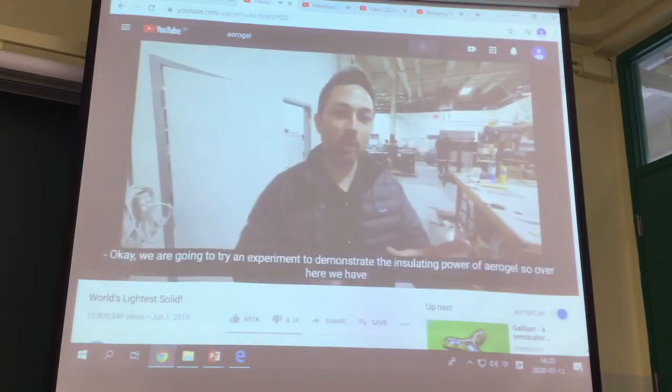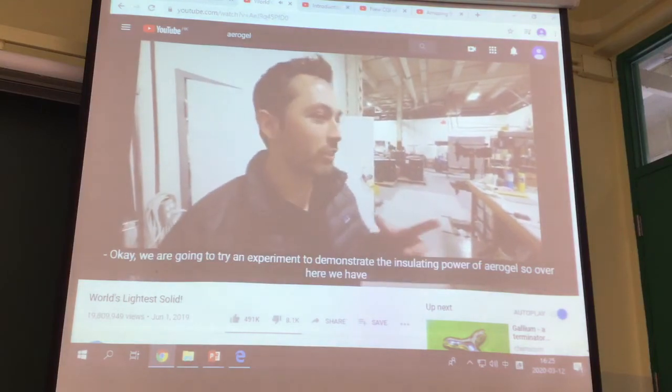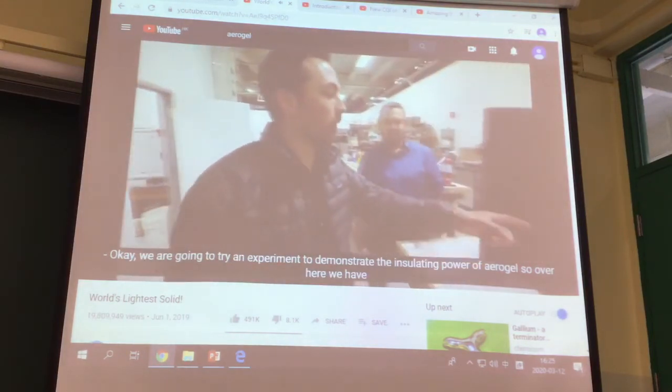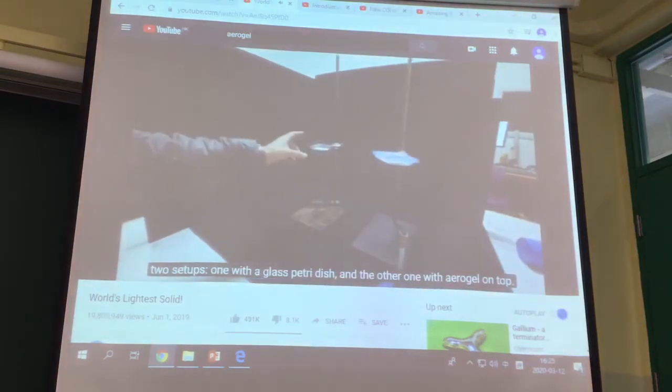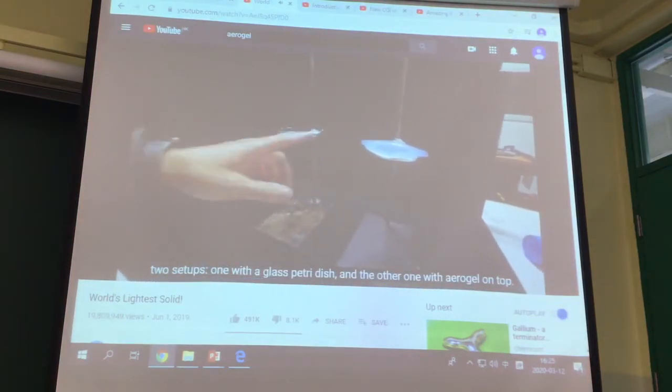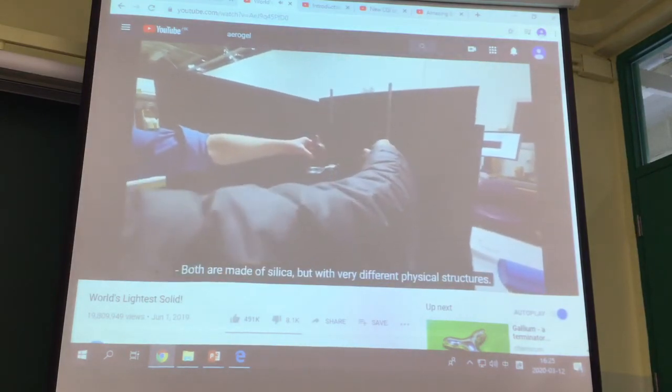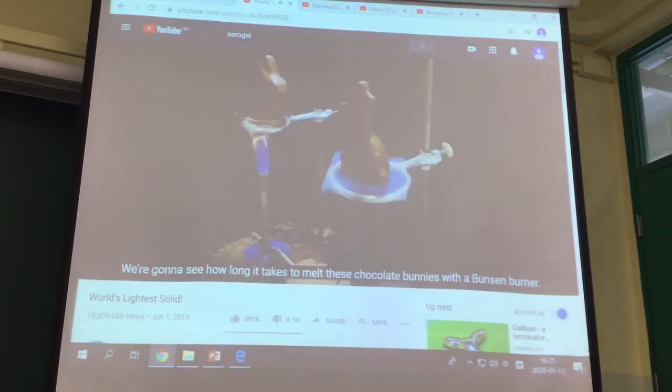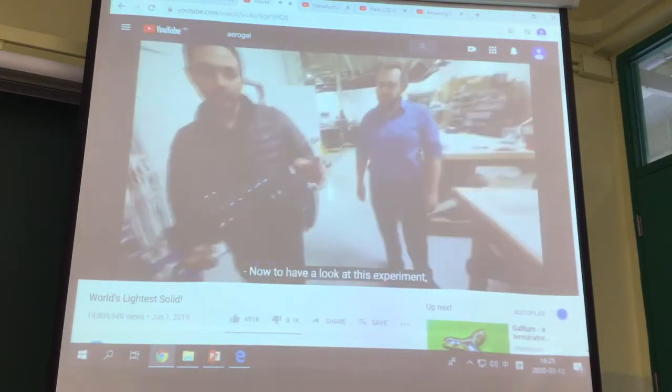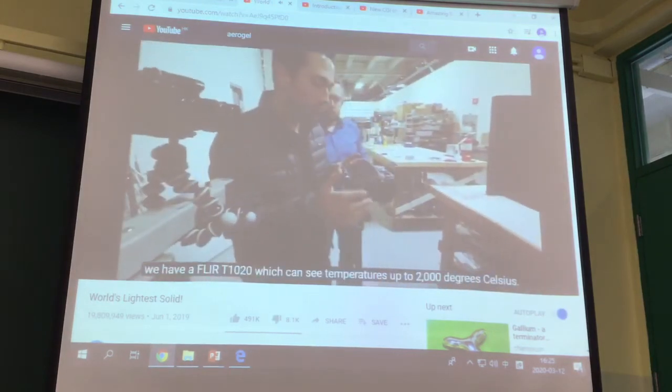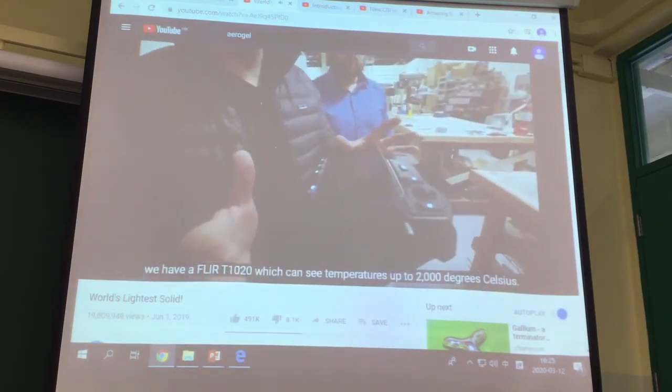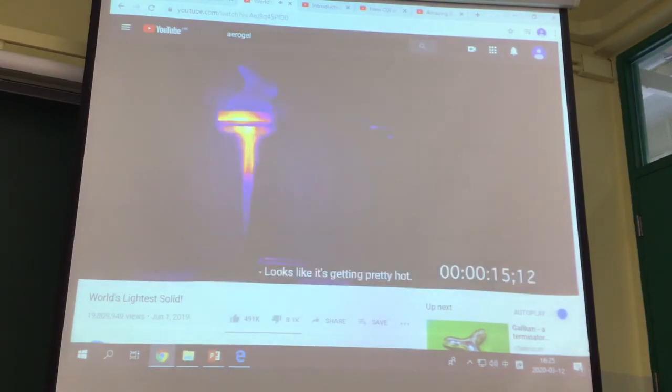We are going to try an experiment to demonstrate the insulating power of aerogel. So over here we have two setups, one with a glass beaker dish, the other one with aerogel on top. Both are made of silica but with very different physical structures. We're going to see how long it takes to melt these chocolate bunnies with a Bunsen burner. We have a FLIR T1020 which can see temperatures up to 2,000 degrees Celsius. You can see the glass is getting really hot already. After just a minute, the bunny is melting and smoking.